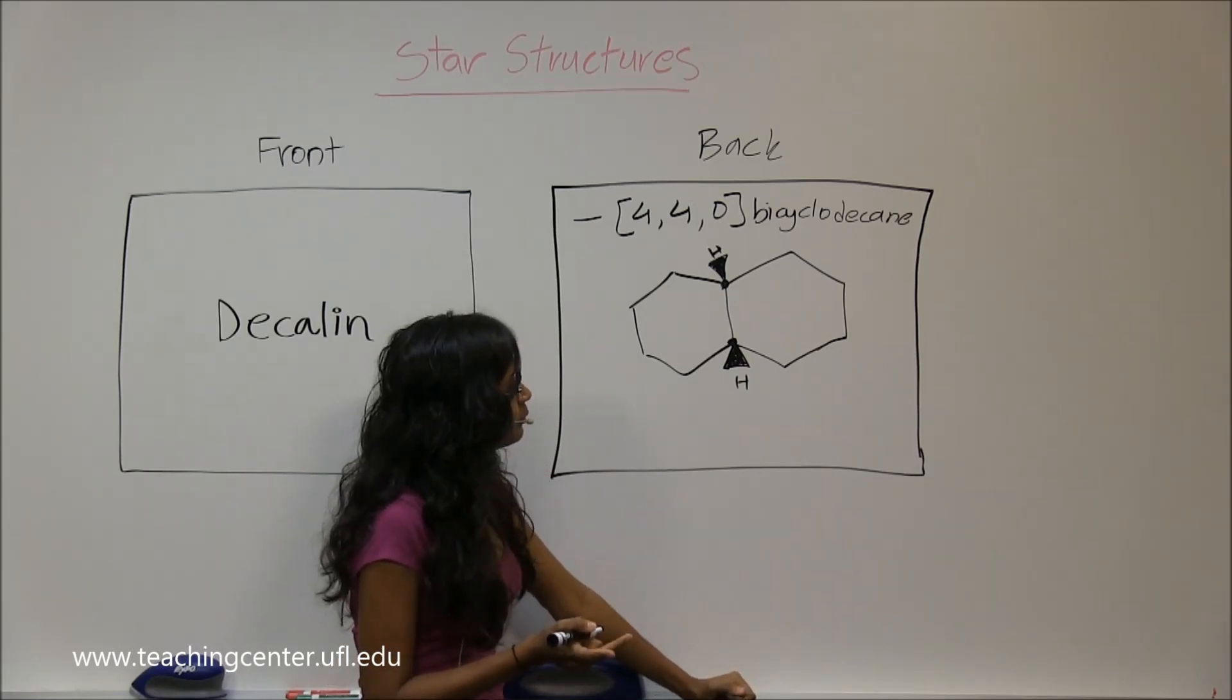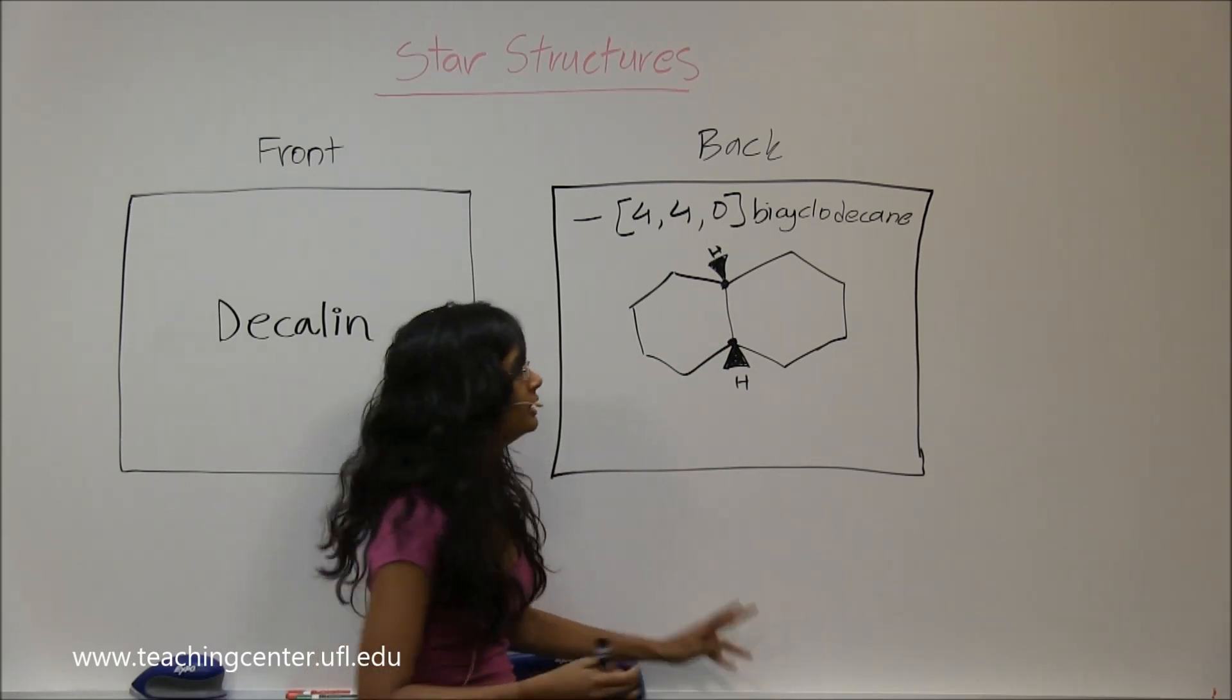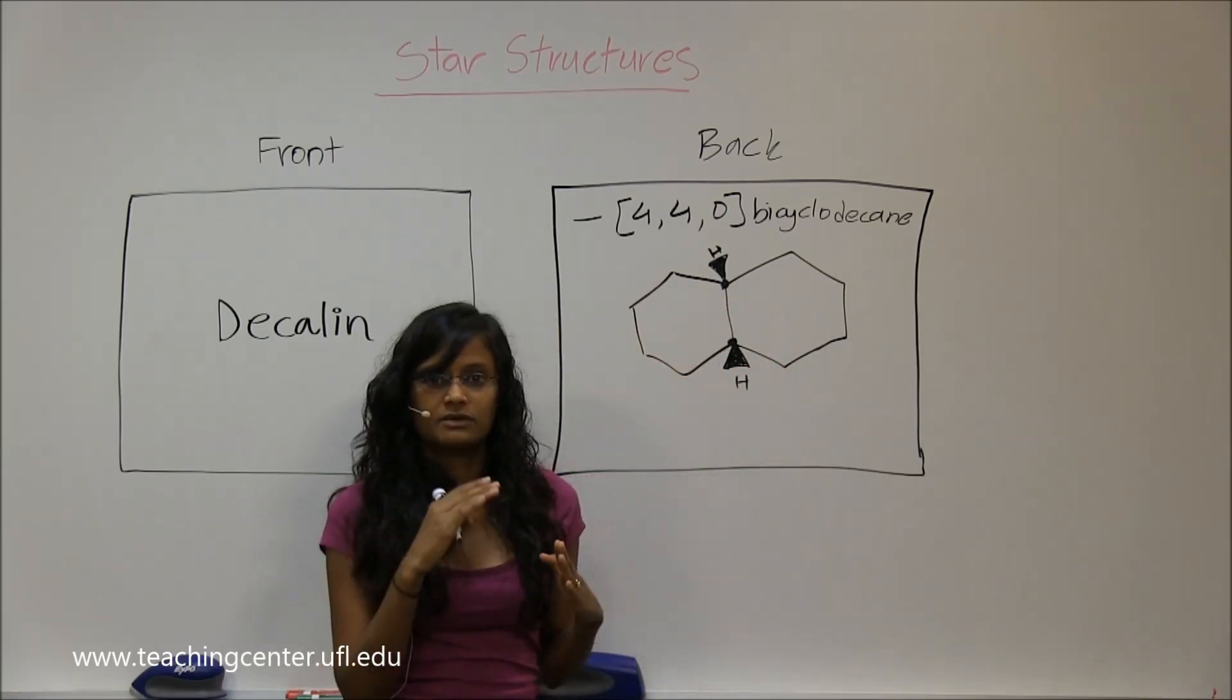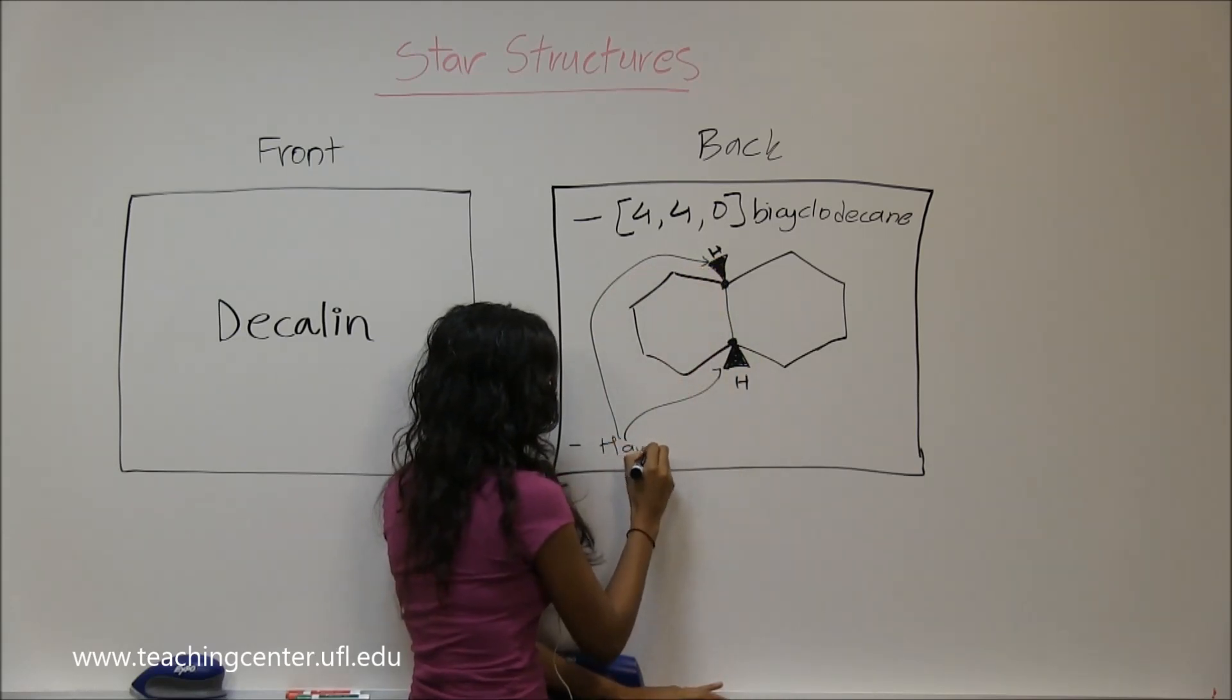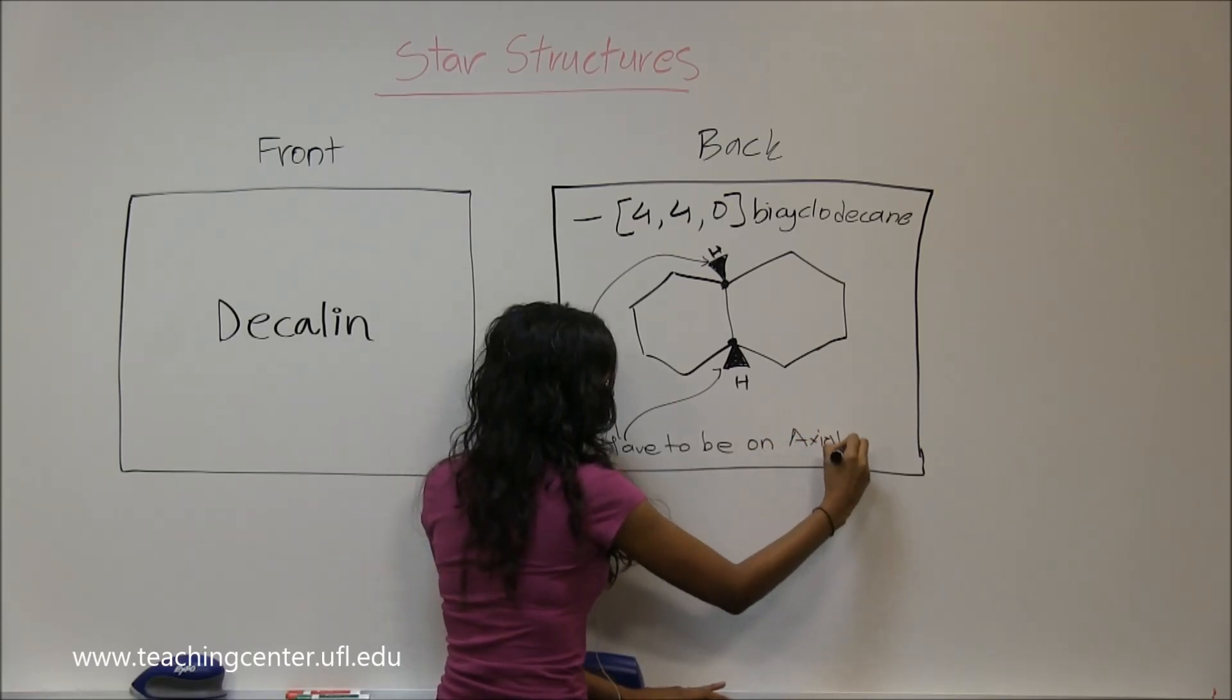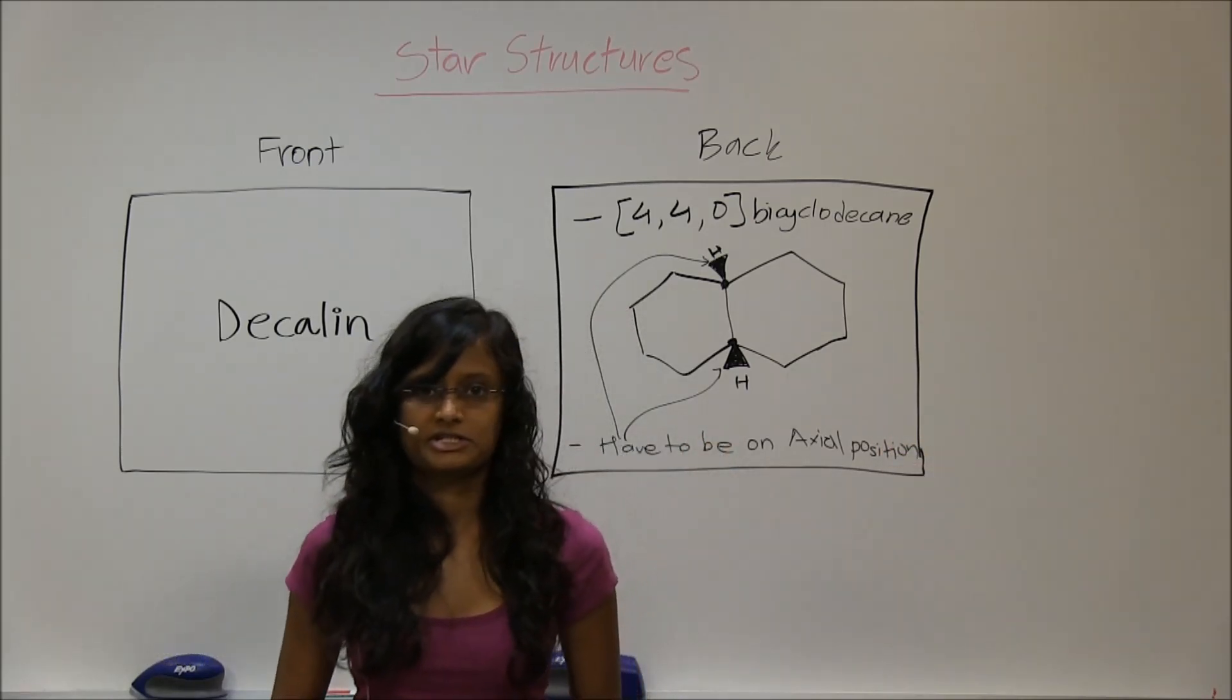These two hydrogens, whenever you draw them in chair conformation, have to be on axial position because that's where two different chairs are connecting to each other. They don't have an equatorial position available, so keep that in mind. These two hydrogens have to be on axial position. This is for exam purposes—sometimes he has questions like that.